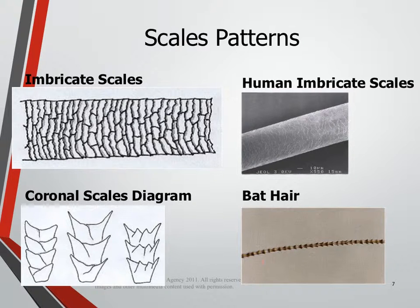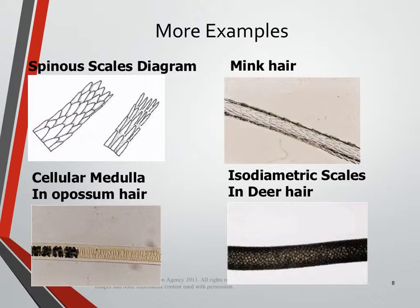This picture at the bottom shows an example of coronal scales. Here are some more examples of different kinds of scale patterns, and right away you should be able to tell that many of them look very different. Because they look so different, it's really easy for us to tell if we're looking at a human hair versus an animal hair.